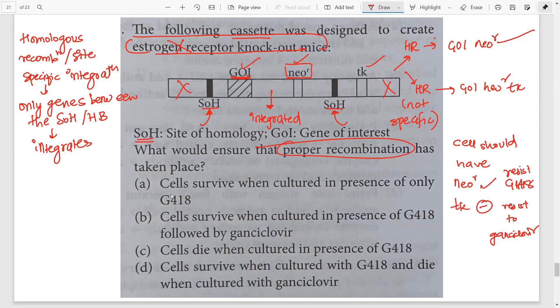So let's see the first option. It says cells will survive when cultured in presence of only G418. It's not true right? It will survive also when there is ganciclovir. Second option says survive when cultured in presence of G418 followed by ganciclovir. Which is correct? It should survive in presence of both positive selection by G418 and negative selection by ganciclovir. So this is the correct option. Let's look at the others. Cells die when cultured in presence of G418. Not true, it has the neo-R gene. Cells survive when cultured in G418 but die when cultured with ganciclovir. No, this is the case of non-specific integration. So we assure that option B is the correct answer. Solving this you'll get four marks in NET.